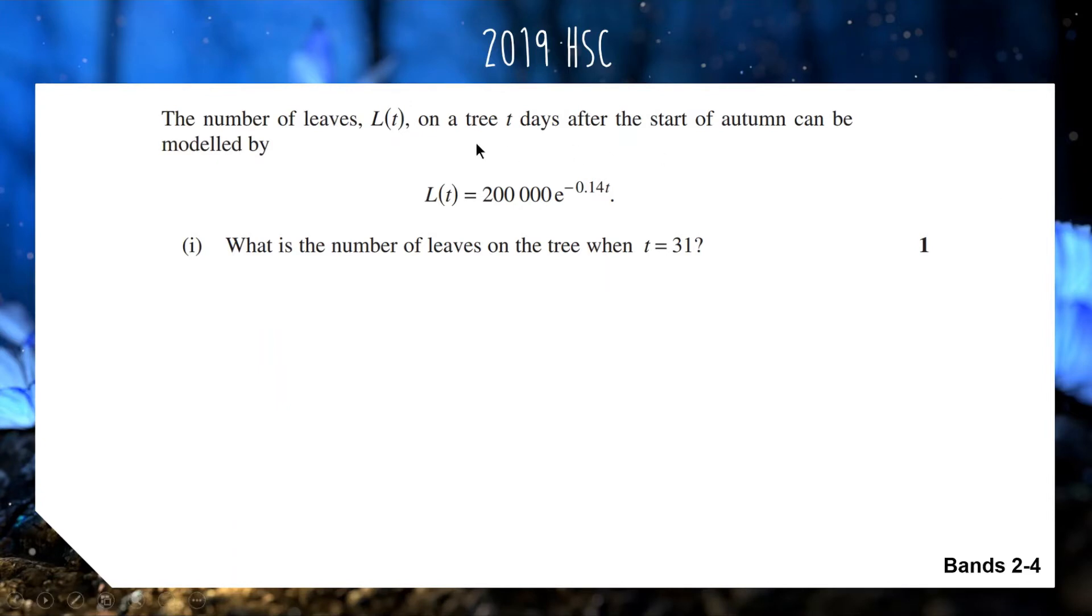Don't overthink this question. All we need to do is take our function and substitute t equals 31 using our calculator. We have 200,000 e to the negative 0.14 times 31. If you feed that through your Casio, you should get around 2607. Because this is number of leaves, it makes sense to round to the nearest whole number.